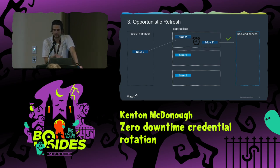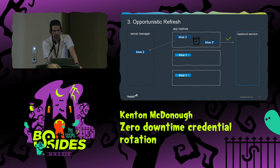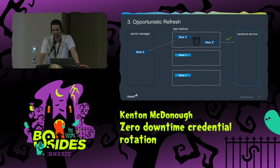There's really no reason not to do this. If your secret manager had a problem and you couldn't generate blue-two-prime, you have whatever 25% of your lifetime is to figure it out. If you don't figure it out in that time, you have other problems to worry about because something is really out of whack.